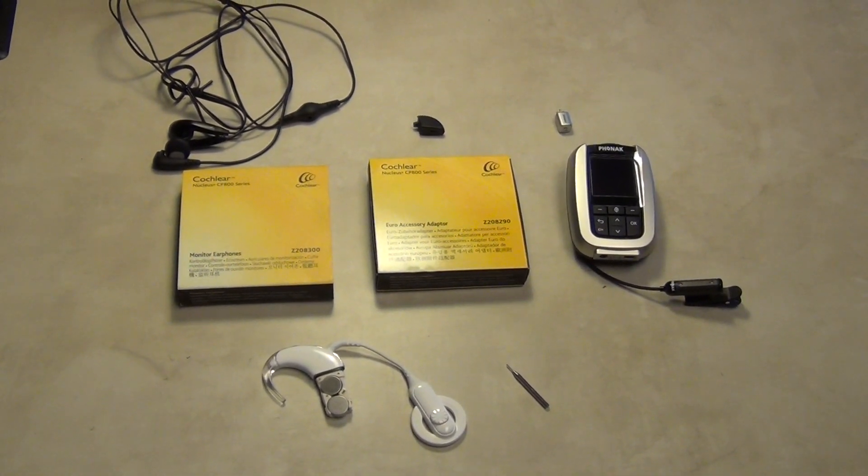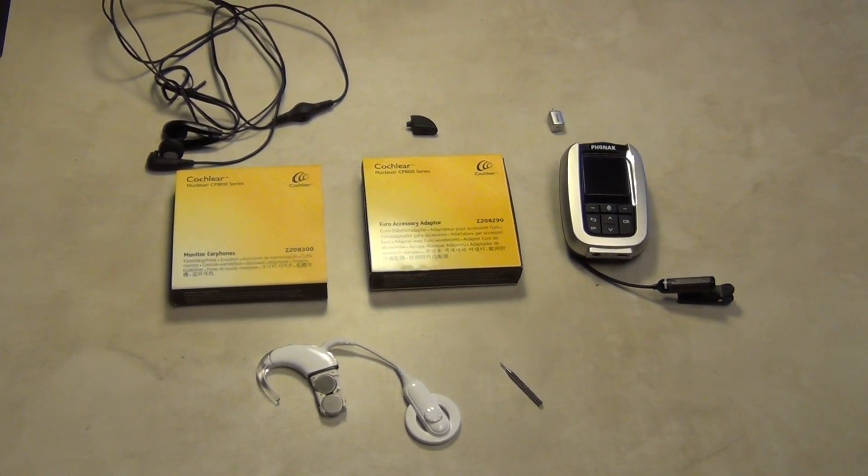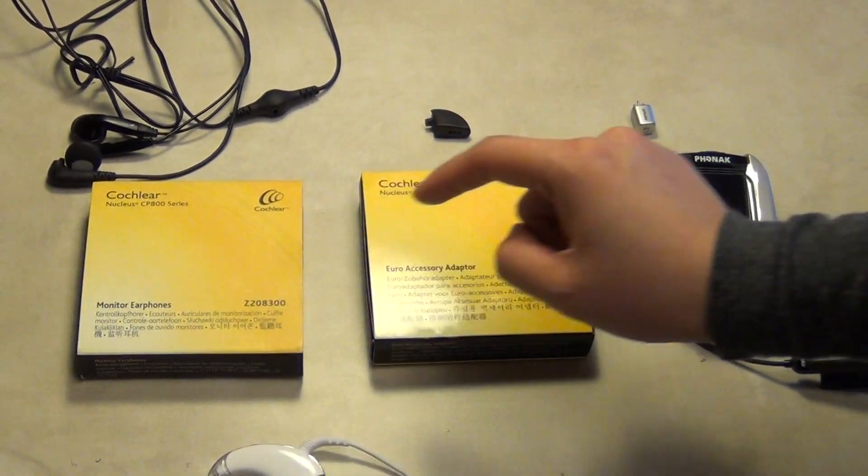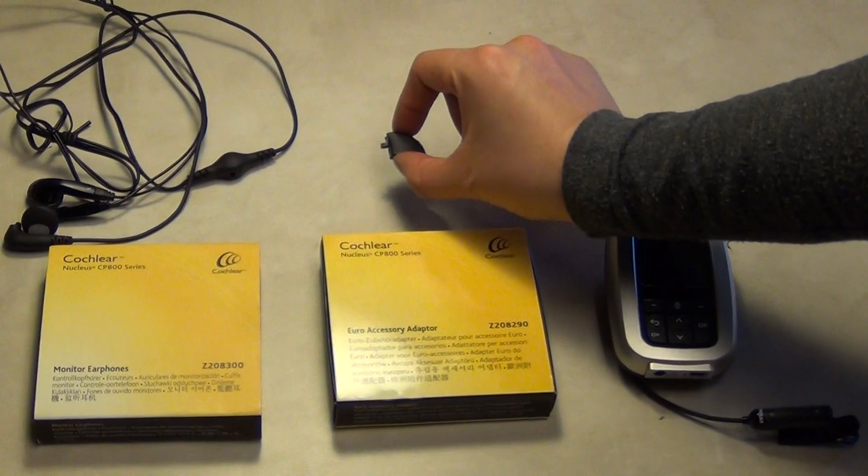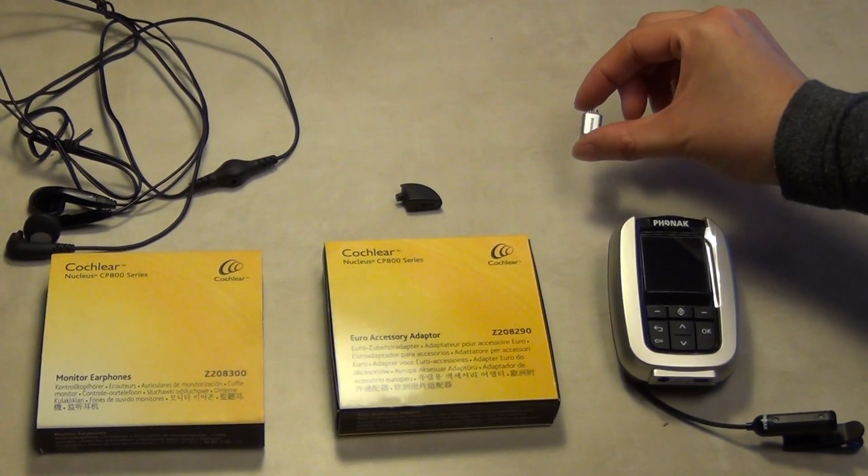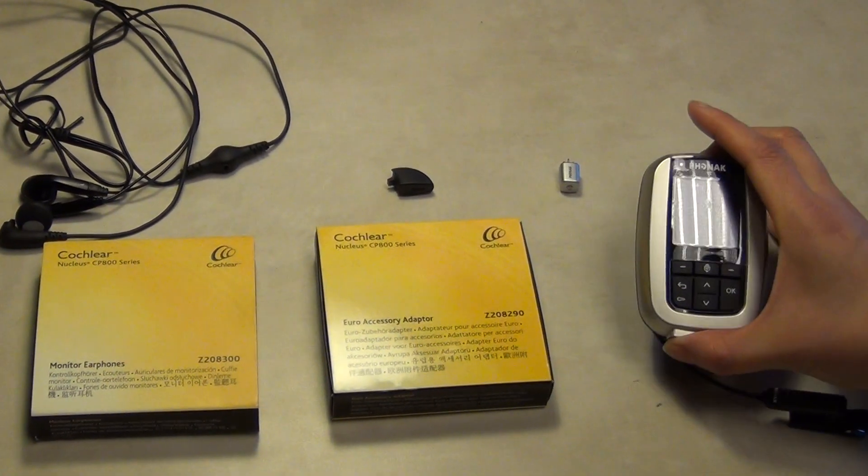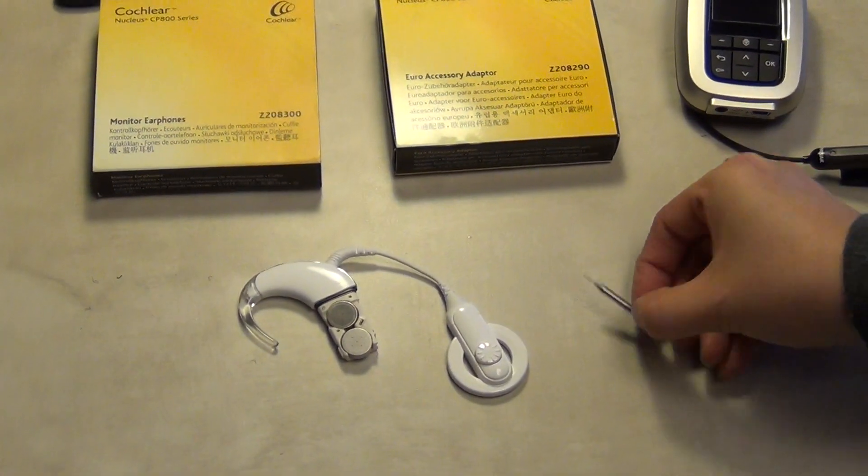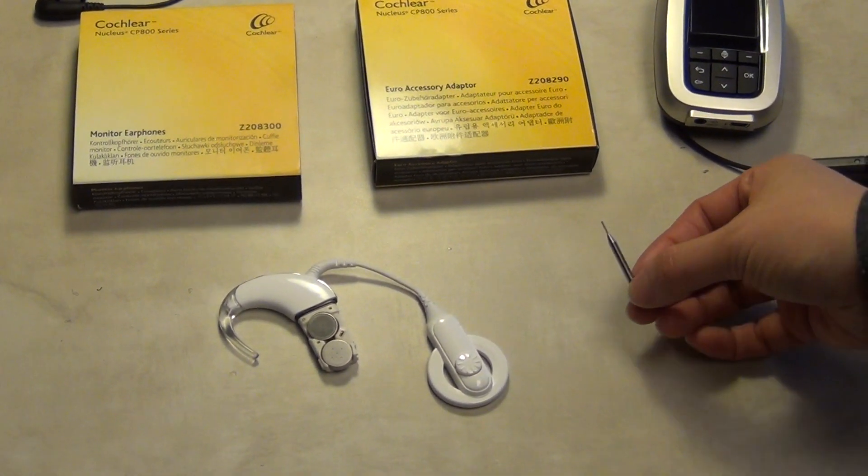Here's how you would do a listening check on the Nucleus 5 cochlear implant processor. You would need the monitor earphones specifically for the Nucleus 5, the Euro accessory adapter, an FM receiver, an FM transmitter, your cochlear implant processor, and a tiny screwdriver if you don't have long fingernails.